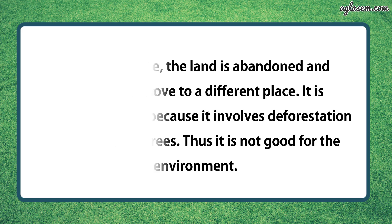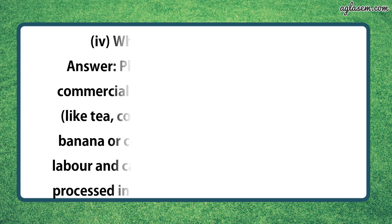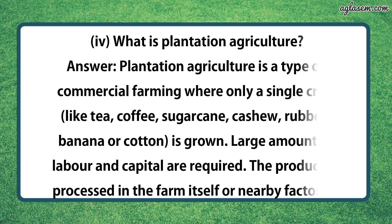Fourth part says, what is plantation agriculture? So the answer is, plantation agriculture is a type of commercial farming where only a single crop like tea, coffee, sugarcane, cashew, rubber, banana or cotton is grown. Large amounts of labor and capital are required. The produce is processed in the farm itself or in nearby factories.